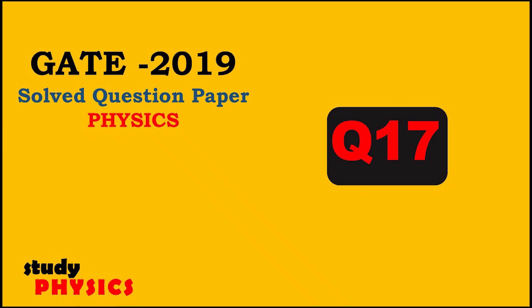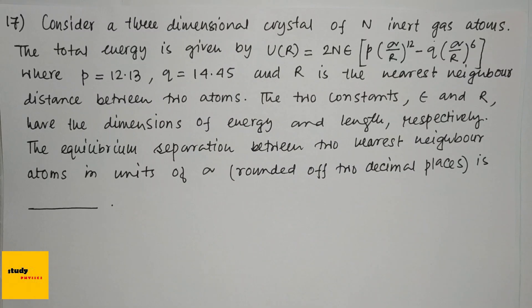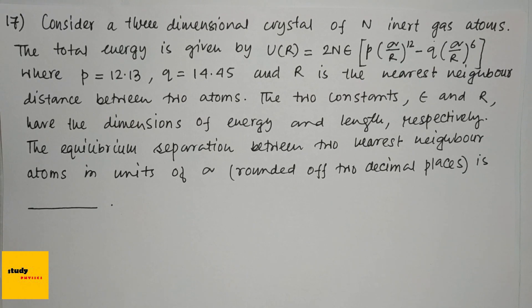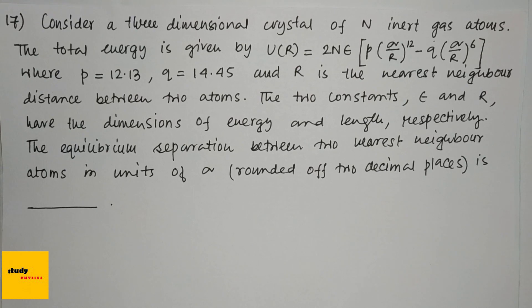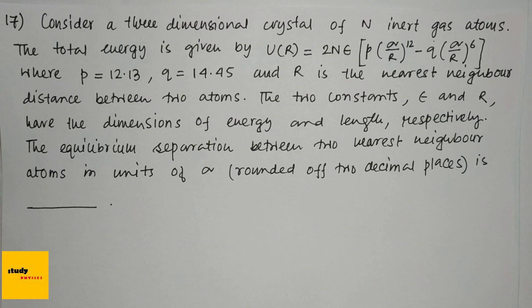Hi everyone, welcome to Study Physics. Here's question number 17. Consider a three-dimensional crystal of N inert gas atoms. The total energy is given by U(R) equals 2Nε[p(σ/R)^12 - q(σ/R)^6], where p equals 12.13 and q equals 14.45.